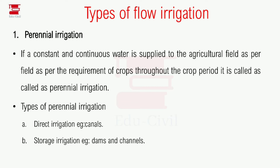The first type is perennial irrigation. If a constant and continuous water supply is provided to the agriculture field as per the requirement of the crops throughout the crop period, it is called perennial irrigation.